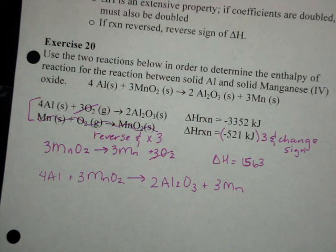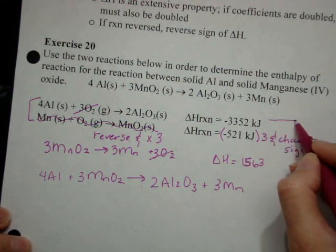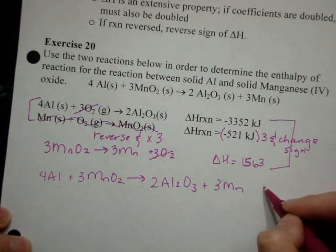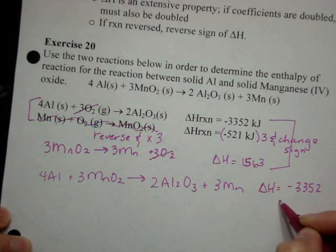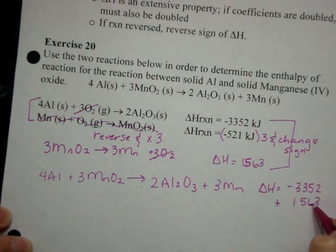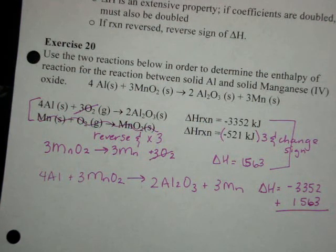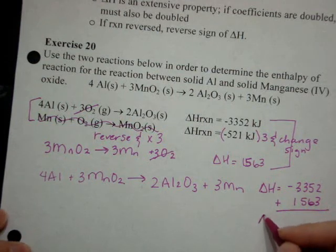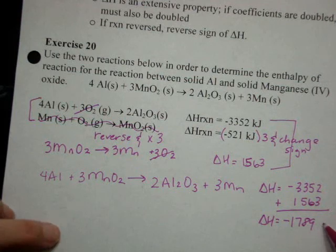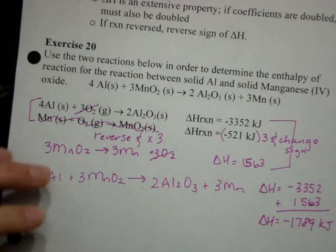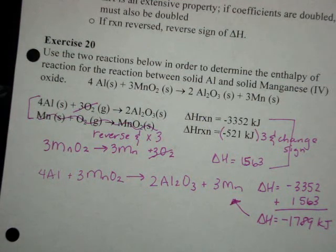Basically all I've done is combine those two equations. Since I've combined those two equations, I can take these two values and add them together. So then the delta H is going to be negative 3352 plus 1563, and that gives me a delta H of negative 1789 kilojoules for that reaction. So again, it's exothermic.